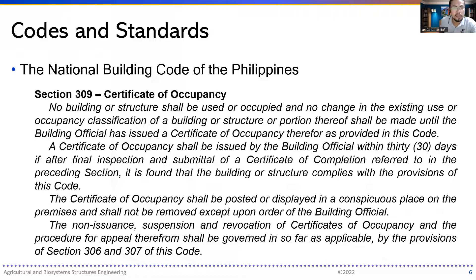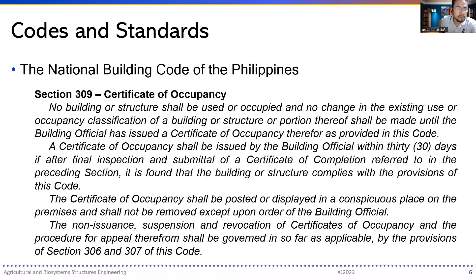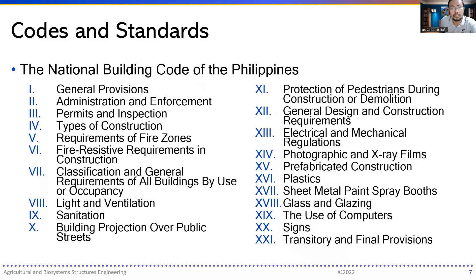The very important aspects of this code have been highlighted. It is a very long code; here is a list of its contents. We've only tackled the general portions in general provisions, administration and enforcement, and permits and inspection. If you notice, section numbers begin with three digits — the first digit indicates the main chapter. For example, Section 109 is under general provisions because it starts with one, while Section 309 on certificates of occupancy is under permits and inspection.